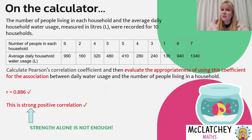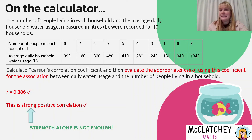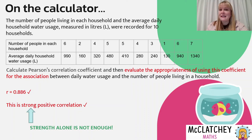Strength alone is not enough. Whenever you're describing correlation you need to talk about the form, the strength, and the direction. We've got the strength — strong — and the direction — positive — but we don't yet know if it's a linear or non-linear equation. Something very important to note is that Pearson's correlation coefficient is only used for linear data, and we don't yet know if this is a linear relationship, so we need to work that out.